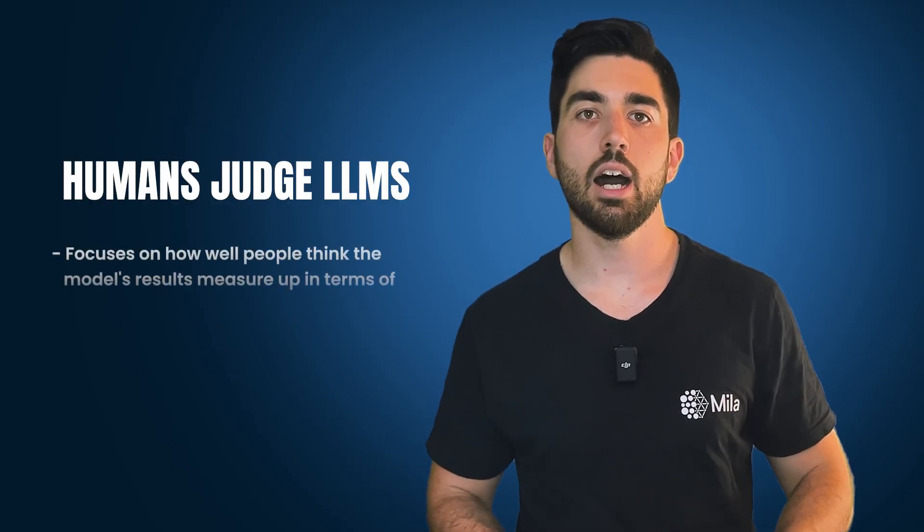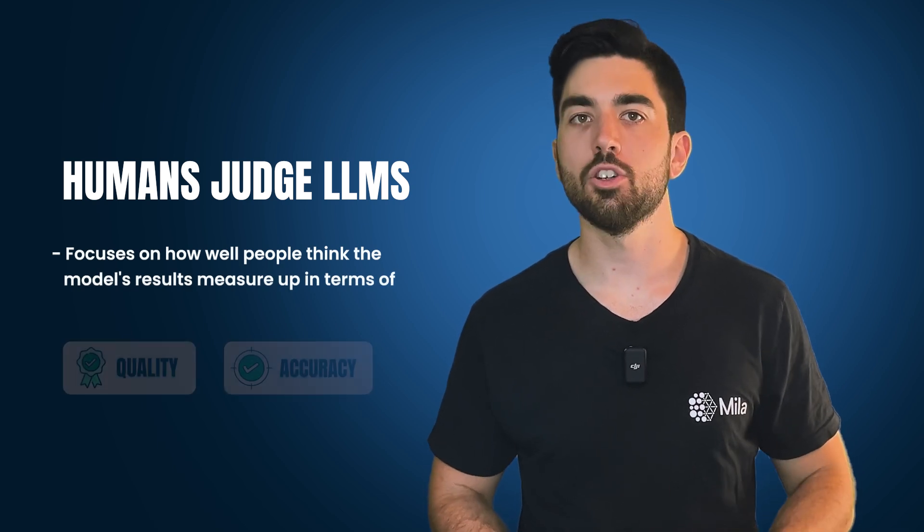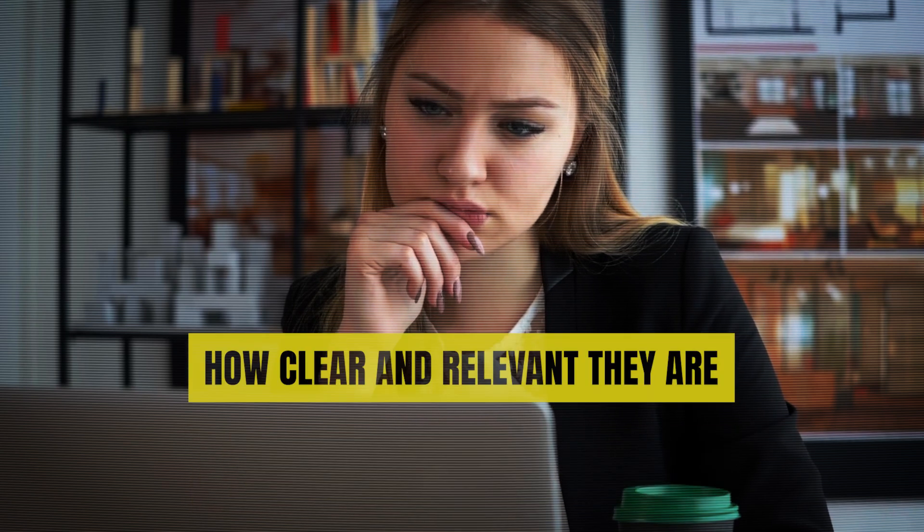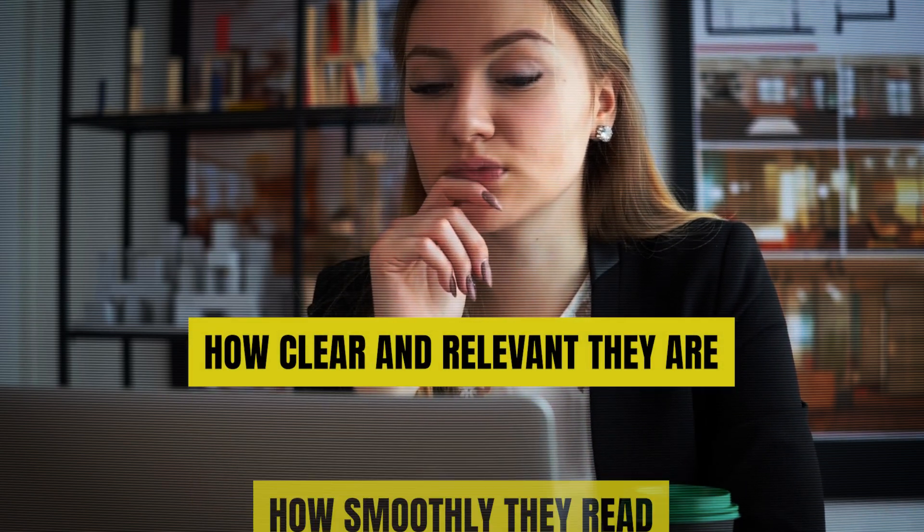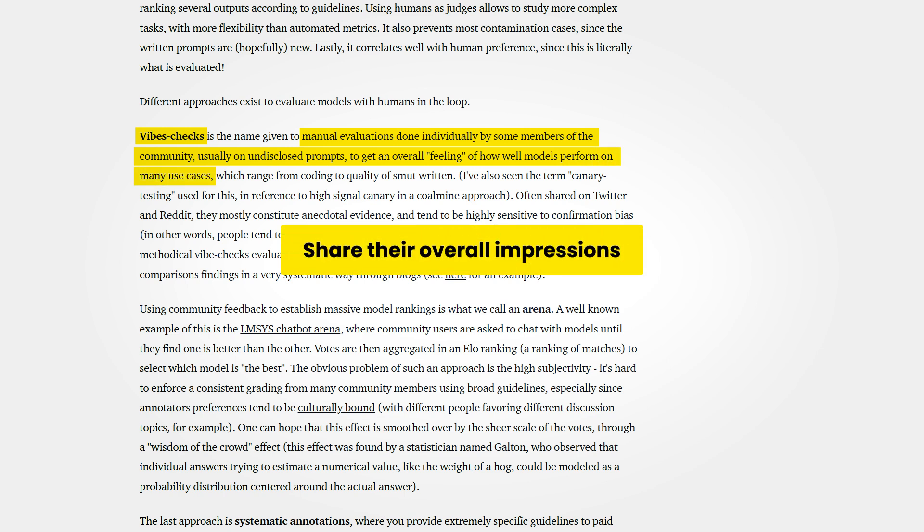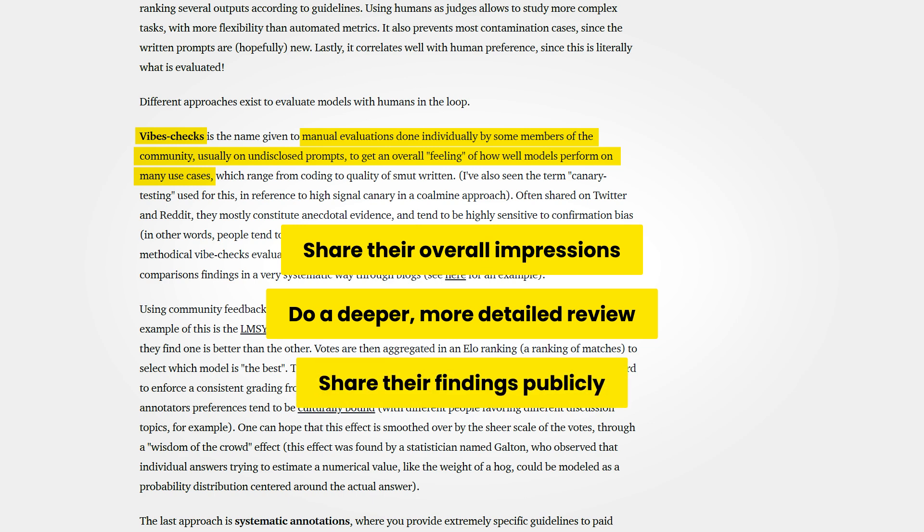And speaking of humans, there's pretty much nothing better than that. In the last approach, where humans judge LLMs, the evaluation focuses on how well people think the model's results measure up in terms of quality and accuracy. Evaluators look at the outputs and consider how clear and relevant they are and how smoothly they read. It can work in a few different ways. One of them is VibesCheck, where community members try out different models by giving them specific prompts to see how they respond. They might share their overall impressions or do a deeper, more detailed review, and even share their findings publicly.